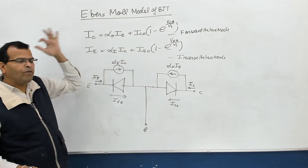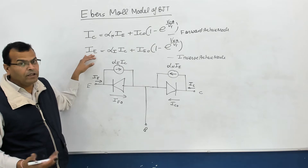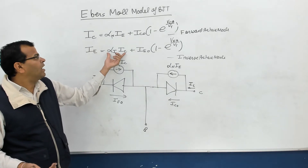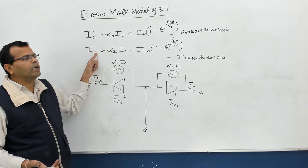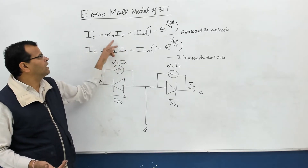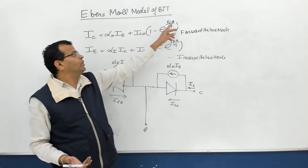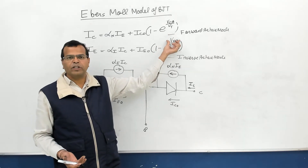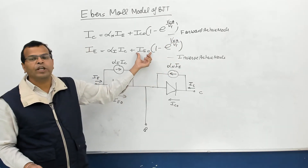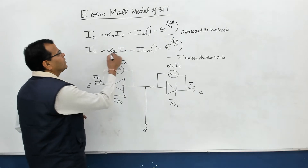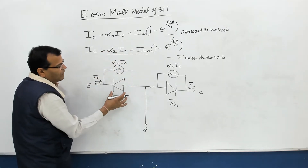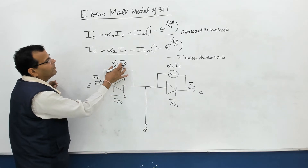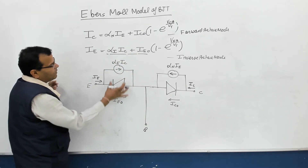For inverse active mode, we get the expression of I_E similar to I_C. The emitter junction is reverse biased and the collector junction is forward biased. Alpha_I times I_C — E is replaced by C and C is replaced by E; they are interchanged. VCB is replaced by VEB. Since the emitter junction is reverse biased in inverse active mode, that term is neglected. This is the reverse saturation current at the emitter junction, represented by a diode. The emitter current also has a dependent current source which is a function of I_C: alpha_I times I_C. So this two-diode model is called the Ebers-Moll model.